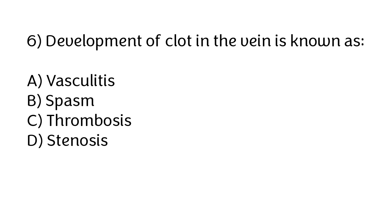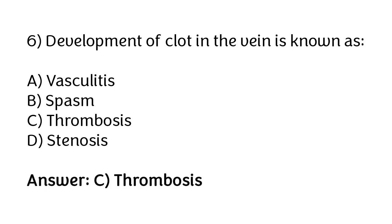Development of a clot in the vein is known as: vasculitis, spasm, thrombosis, stenosis. The correct answer is option C — development of a clot in the vein is known as thrombosis.